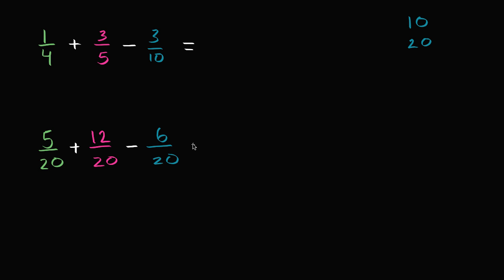So what is this going to be equal to? Well, now I have 5/20 plus 12/20 minus 6/20. So what is this going to be? Well, there's a bunch of ways you could think about it.